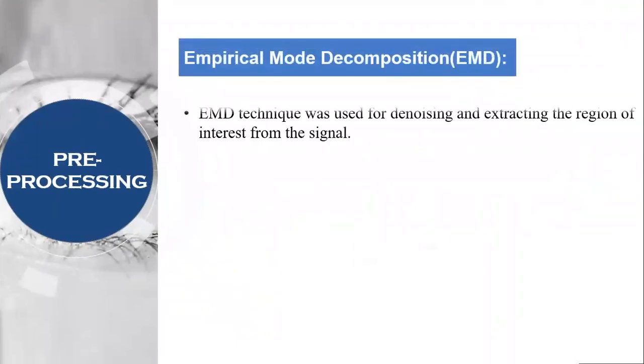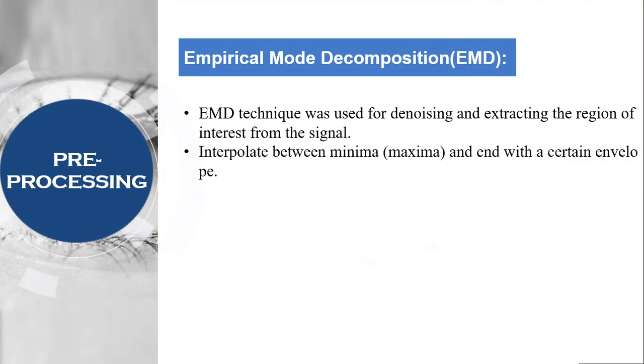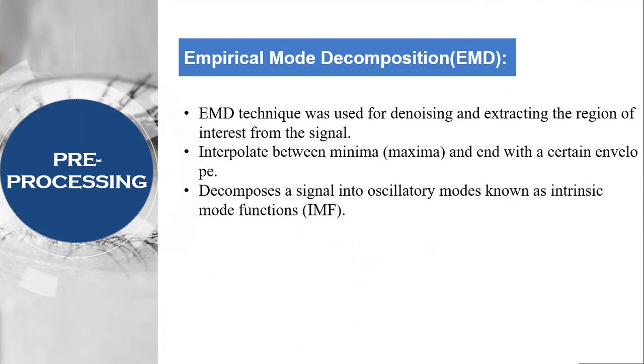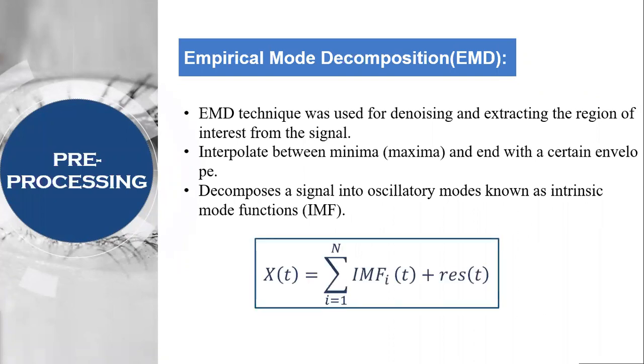In preprocessing, empirical mode decomposition was done. This technique was used for denoising and extracting the region of interest from the signal and it interpolates between minimum, maximum and the end with a certain envelope. It decomposes a signal into oscillative modes known as intrinsic mode functions. In our case, we eliminated all the IMFs except for the first IMF.